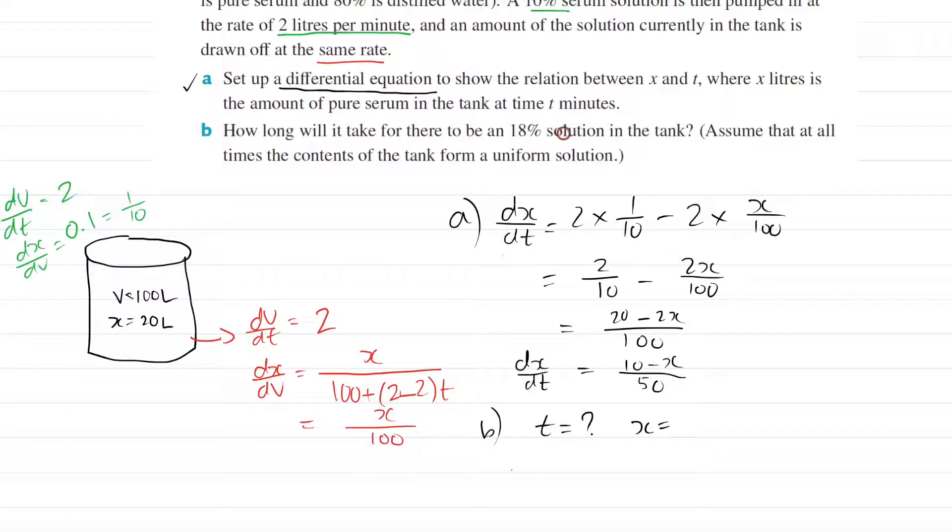So it says 18% of the solution, right? In your tank there's always 100 liters, no matter when or what the time is, because 2 is coming in, 2 is going out. So there's no addition or subtraction of volume, it's always 100. So in this case, x would be 18% of 100, so that means 18 liters in your tank.